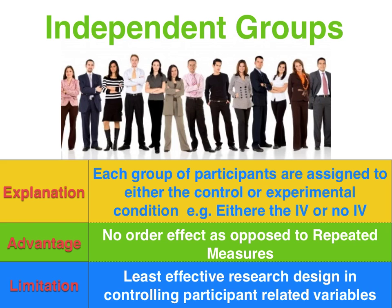In terms of independent groups, we don't have to worry about an order effect, as opposed to repeated measures. And if asked for an advantage in comparison to matched pairs, you'd say that it is more time and cost effective because we don't have to allocate resources for the pre-matching process. In terms of limitations, particularly when we have smallish sample sizes, it is the least effective in controlling participant-related variables — less effective than both matched pairs and repeated measures.